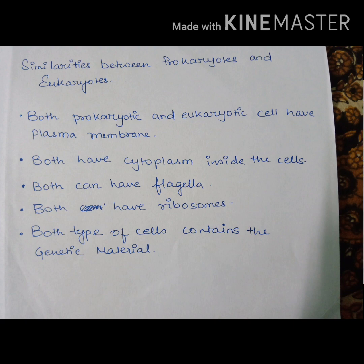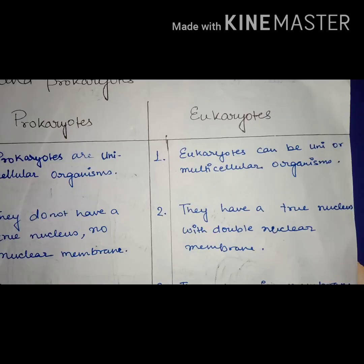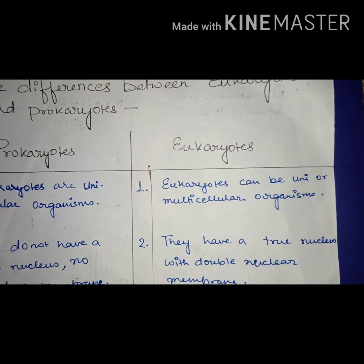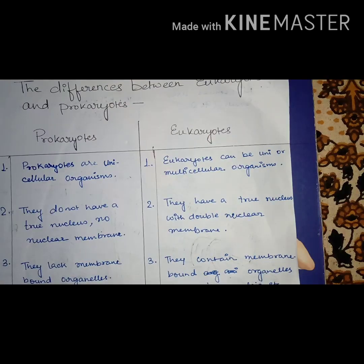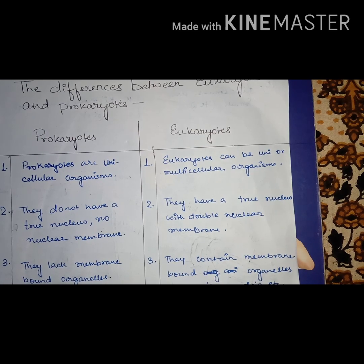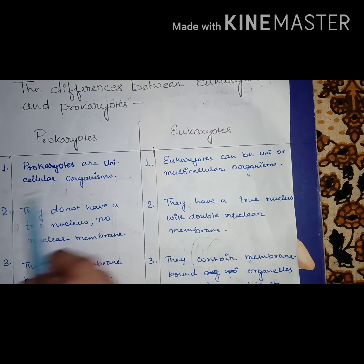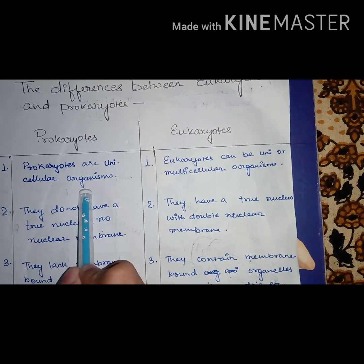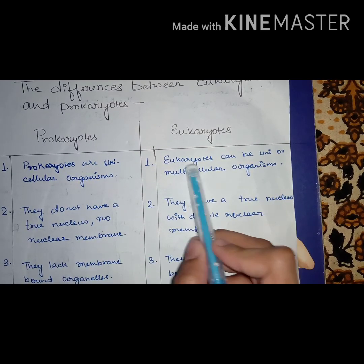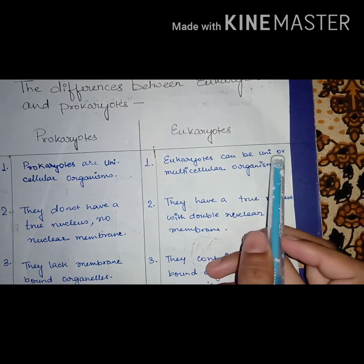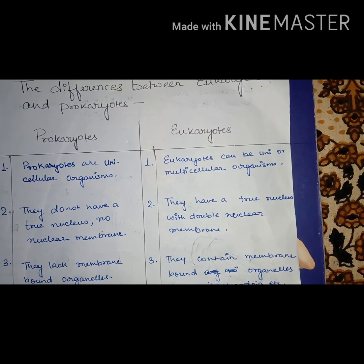Now moving on to the differences between eukaryotes and prokaryotes. The first difference is prokaryotes are unicellular, whereas eukaryotes can be unicellular or multicellular in nature.